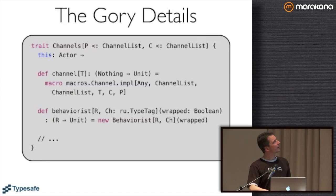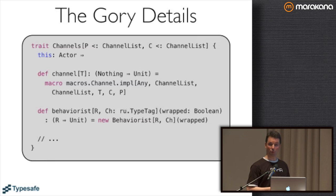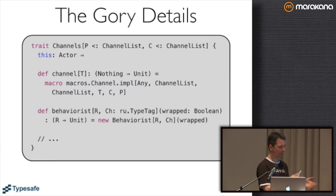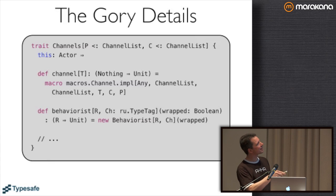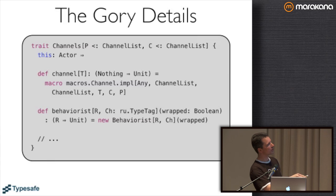How is this wired up? We have this Channels trait which has the parent and self-channel type arguments. I'm preferring a self-type annotation here - it has nothing to do with the reasoning Daniel presented this morning. It's just to force people to write Actor with Channels, because otherwise you could write MyActor extends Channels. Channel is just a normal method which returns some function type - it returns something which has an apply method. And the most specific return type, due to contravariance, is Function from Nothing to Unit.